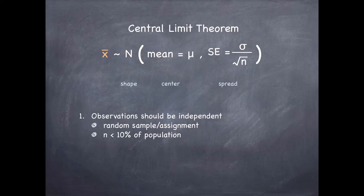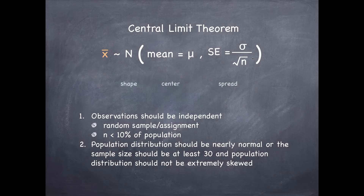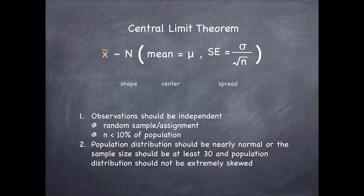We know that within a population, observations are not always independent. You and your family members are within the population of the U.S., so any female in your family will have heights that are dependent on each other. When sampling, we want to make sure that if we've grabbed somebody from your family, we don't grab another one. The second condition is a balance between sample size and the distribution of the population. If the population distribution is nearly normal to begin with, we don't need to worry about sample size. But if it's not, the sample size should be at least 30, and we wouldn't want the population distribution to be extremely skewed. The more skewed the population distribution, the higher sample size we would need to ensure a nearly normal distribution of our sample statistic.